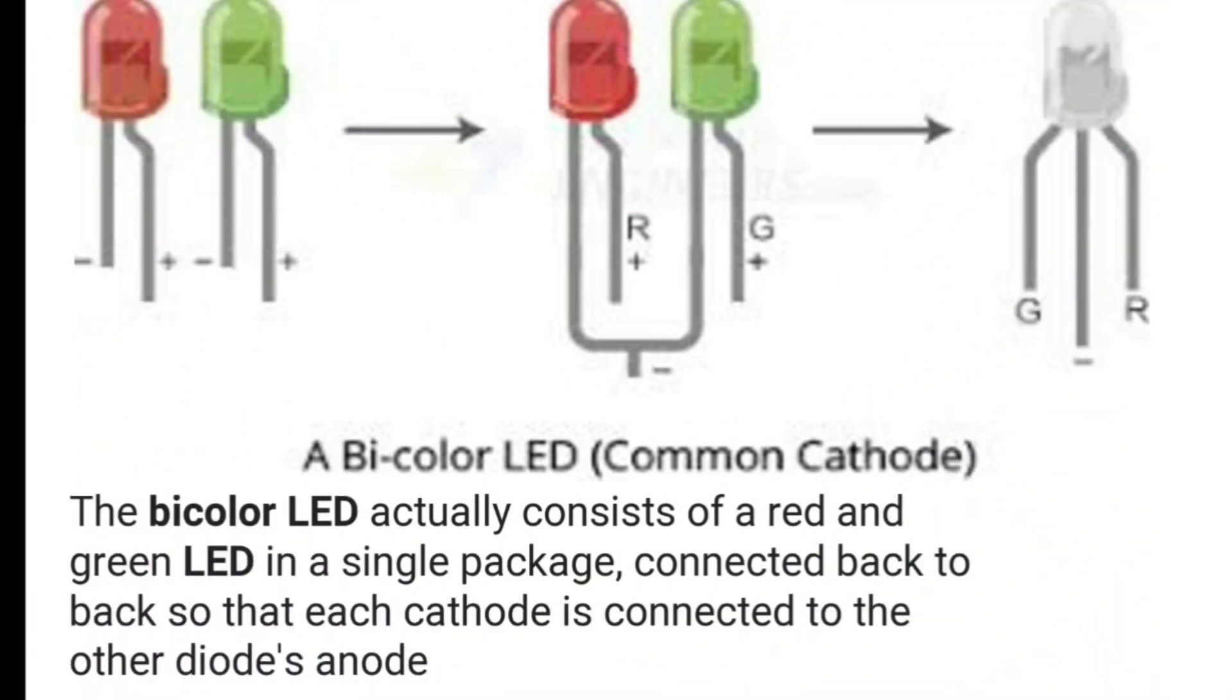This is bicolor LED which has a common cathode. Bicolor means we supply current to both colors at the same time and then the colors get recombined and form additional color. The bicolor LED actually consists of a red and green LED in a single package connected back to back so that each cathode is connected to the other diode's anode.